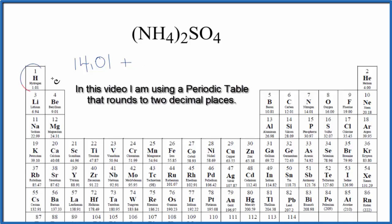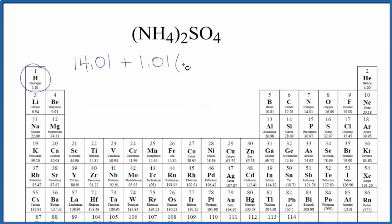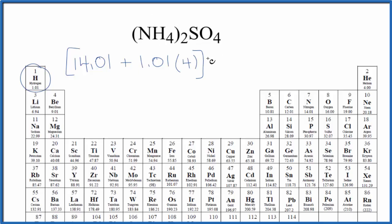Plus hydrogen, 1.01 grams per mole, and we have four hydrogen atoms, so we multiply that by four. Let's put brackets around the whole thing, because we have two of these ammonium ions. So two times everything in the brackets — put a two out here.